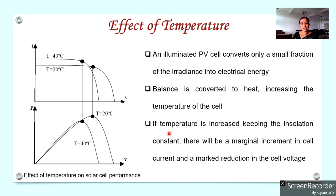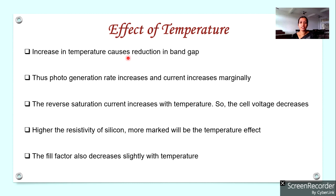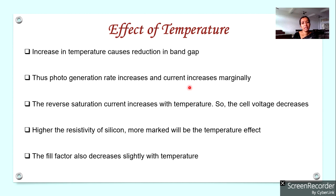Let us see why this happens. In a PN junction, with increase in temperature, the difference between the valence band and the conduction band decreases — that is, the band gap reduces. As a result, free electrons can be generated more easily, the photo-generation rate increases, generation of electron-hole pairs increases, and the current increases marginally. The reverse saturation current also increases with temperature. This is the reason for the increase in current.